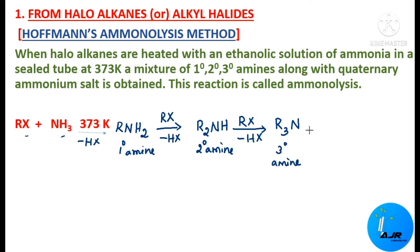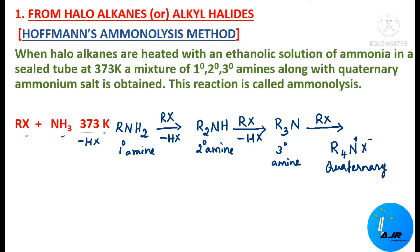When this tertiary amine is again treated with an alkyl halide, we get an adduct — a quaternary ammonium salt, R4N+X−. So this overall reaction is called Hoffmann's Ammonolysis method.